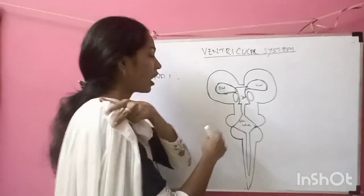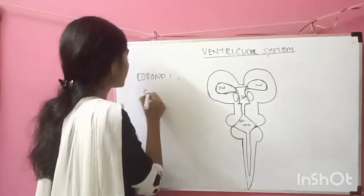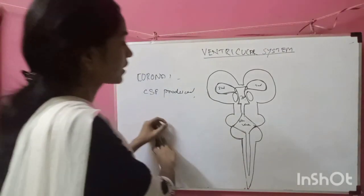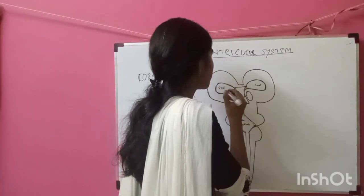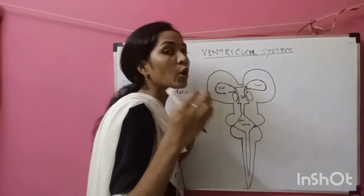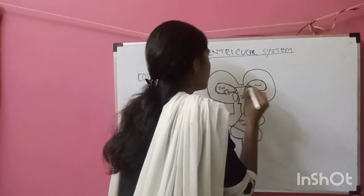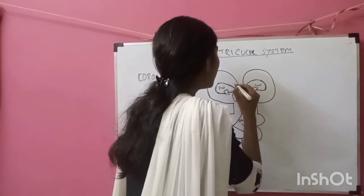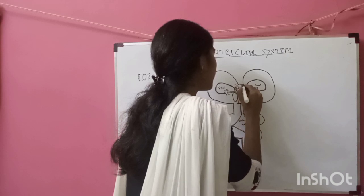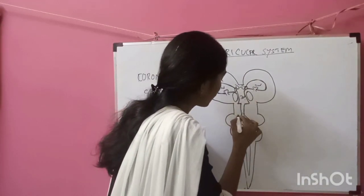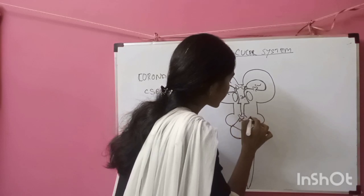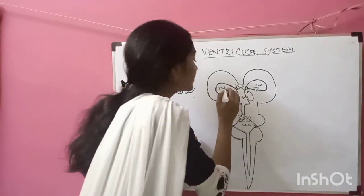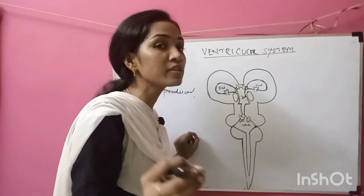Now I am going to tell you how CSF — cerebrospinal fluid — is produced. There is a very special structure present in the ventricles called the choroid plexus. These are the choroid plexuses located in the floor of the third ventricle and in the floor of the fourth ventricle. The function of the choroid plexus is to produce CSF.